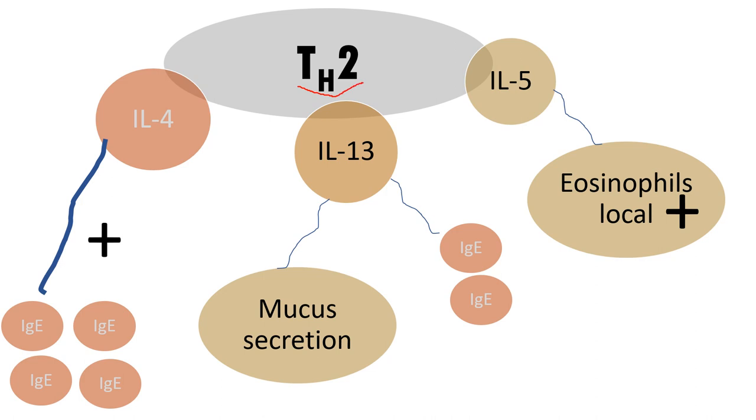This TH2 cell will start secreting cytokines. It will start secreting IL-4, IL-5, and IL-13. Now interleukin-4, what does it do? It starts stimulating B cells to start producing excessive IgE. IL-5 will stimulate the locally recruited eosinophils.